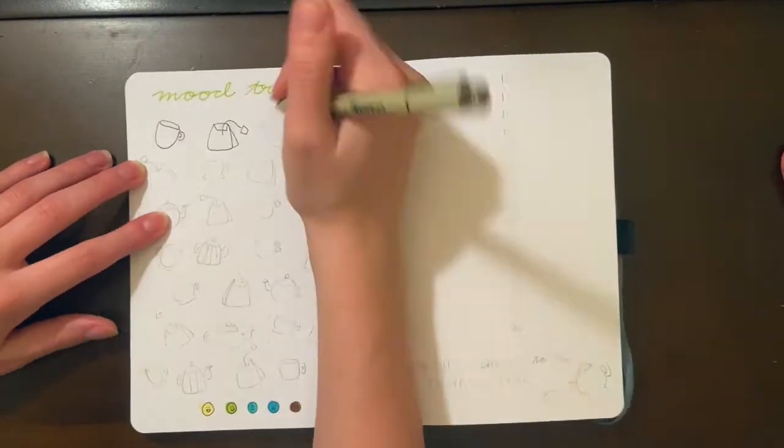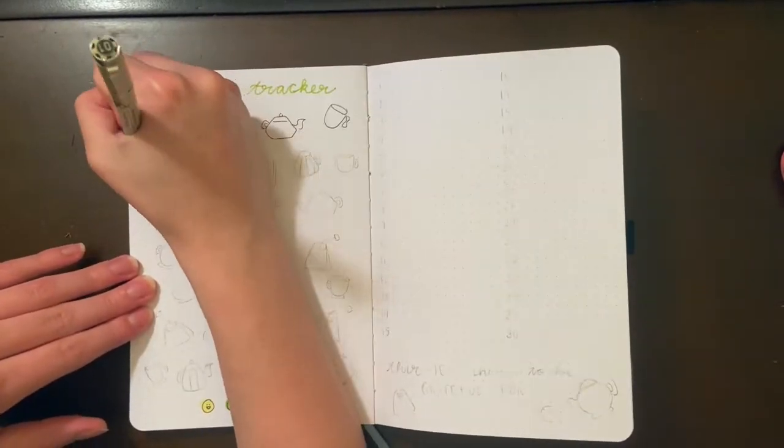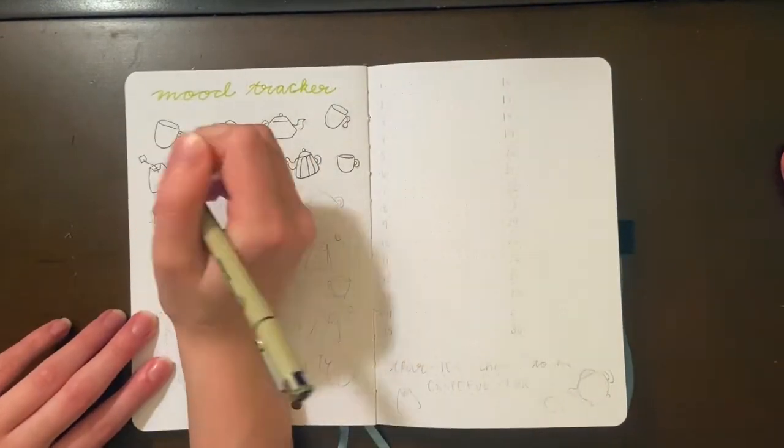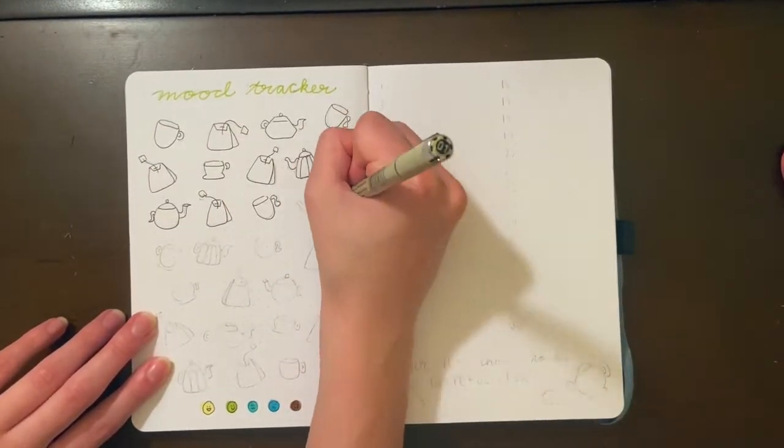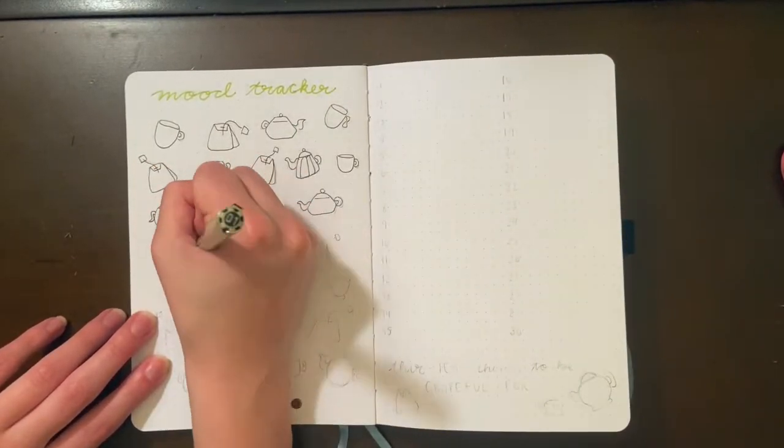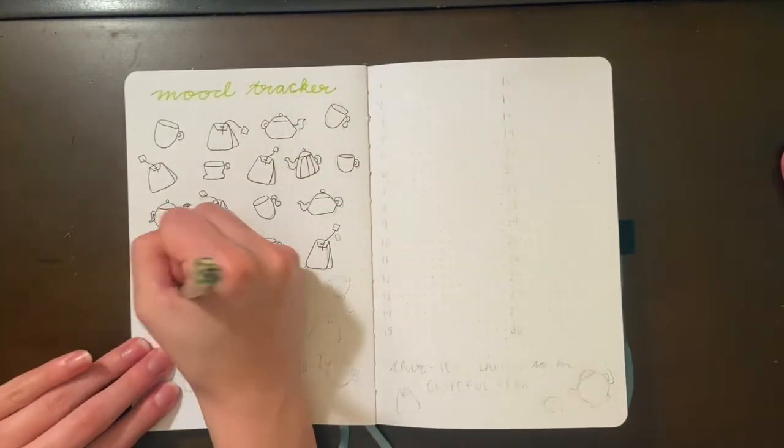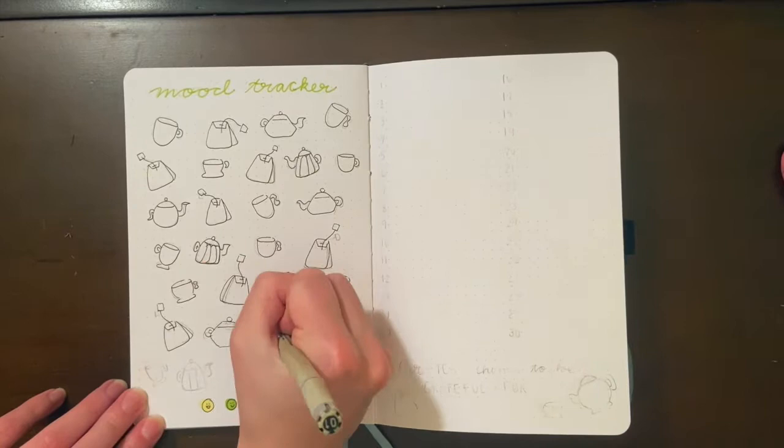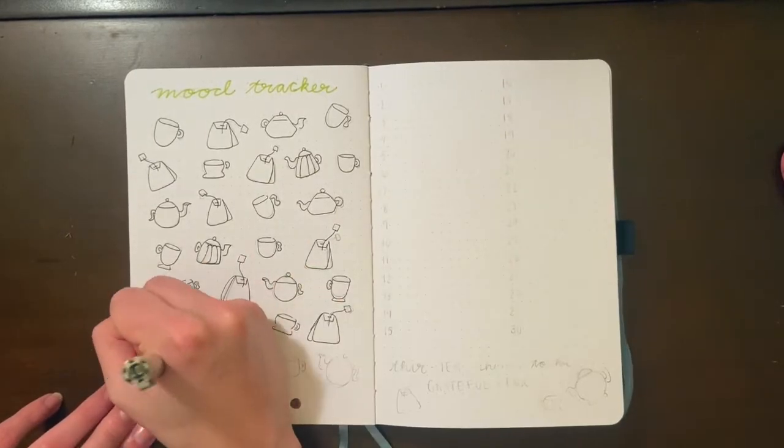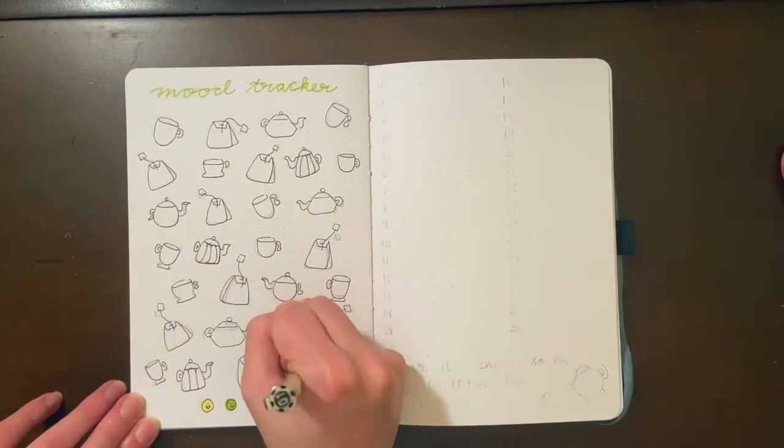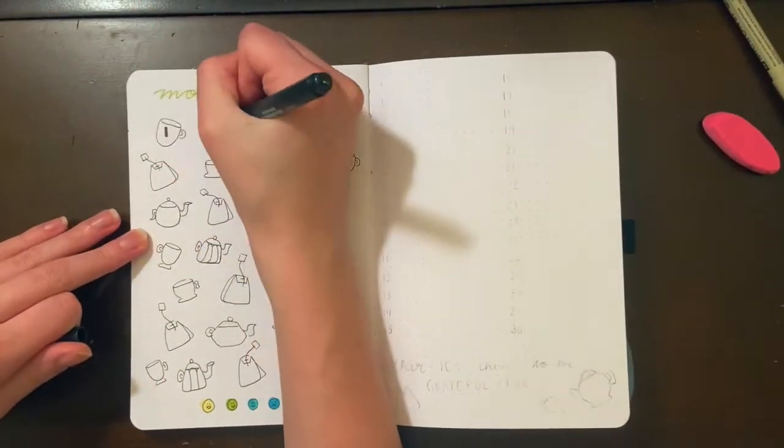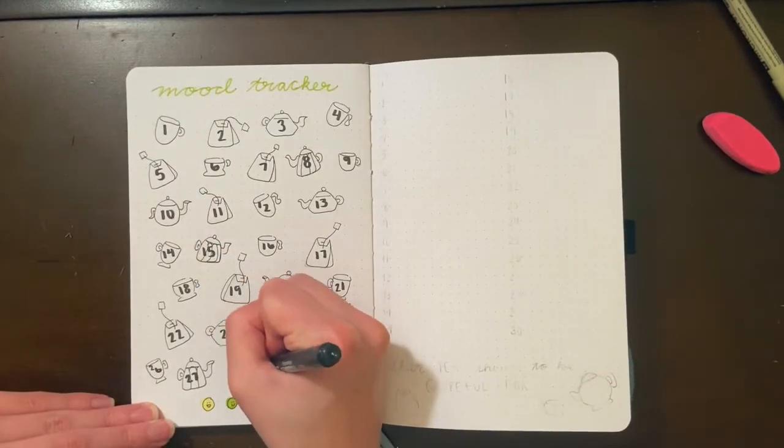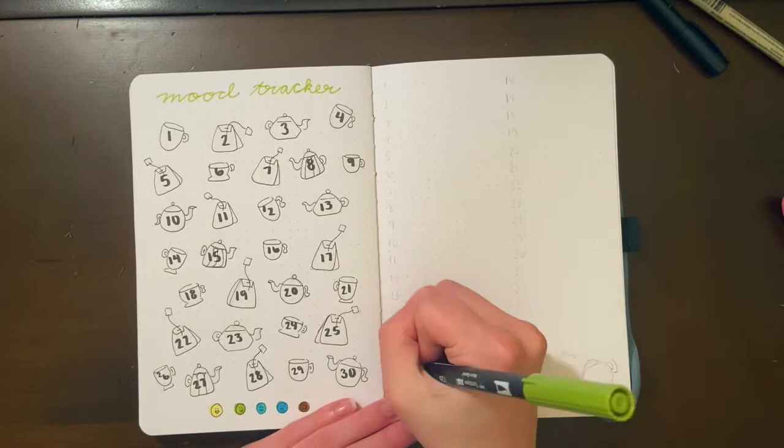So for my mood tracker, I drew out 30 different mugs, tea bags, and kettles. So I have this pretty sped up, but this gives you a good example of what I mean about using different shapes to kind of give some diversity to using the same three objects. I think this spread will look really cool when it's finished and when I color it. I don't think I'm going to color them all solid colors. I might draw different patterns on the mugs and the kettles.